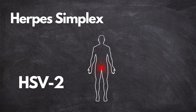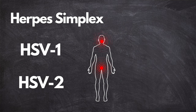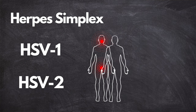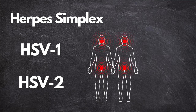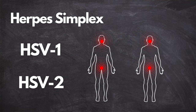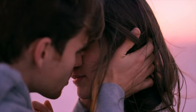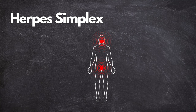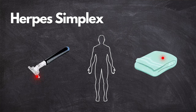However, it is important to note that both types can infect either the oral or genital area. Herpes simplex is primarily transmitted through direct contact with an infected person during active outbreaks. This can occur during intimate activities such as kissing, oral-genital contact, or sexual intercourse. It's crucial to remember that herpes simplex can also be transmitted even if there are no visible sores or symptoms present. Additionally, sharing personal items like razors or towels with an infected individual can also lead to its transmission.